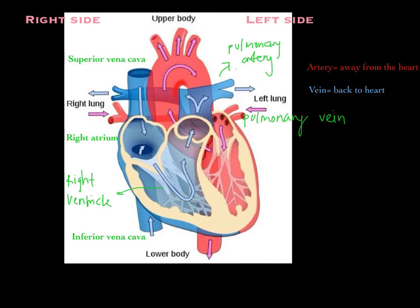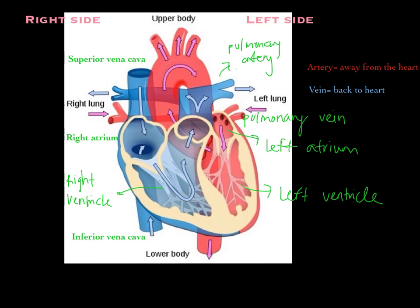The pulmonary veins dump all of the blood from the lungs into the left atrium. The blood must pass through a valve so there is no backflow from the ventricle to the atrium, keeping blood flowing in one direction. It passes through this valve into the left ventricle. The left ventricle contains highly oxygenated blood, ready to be sent to the rest of the body through the aorta — the biggest artery that pumps blood away from the heart to all parts of the body.